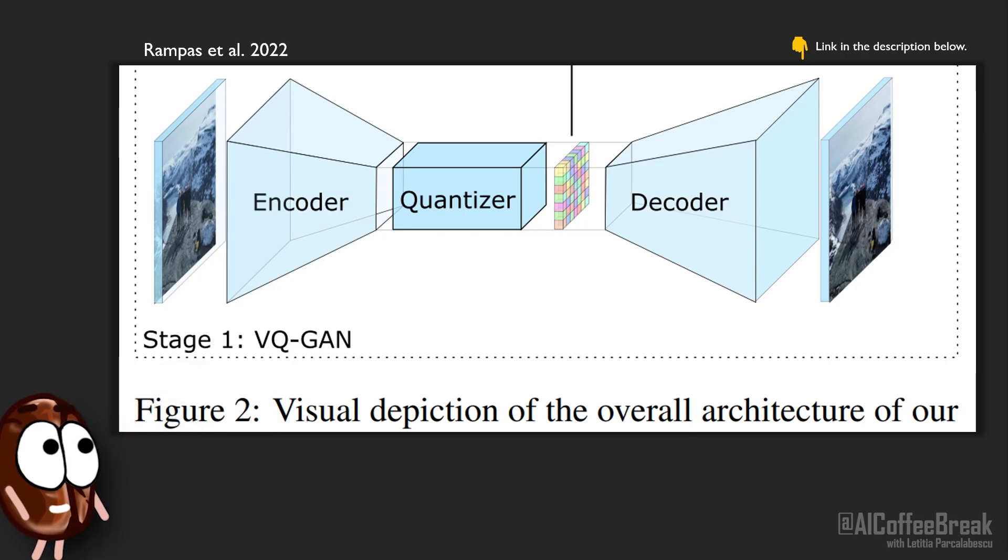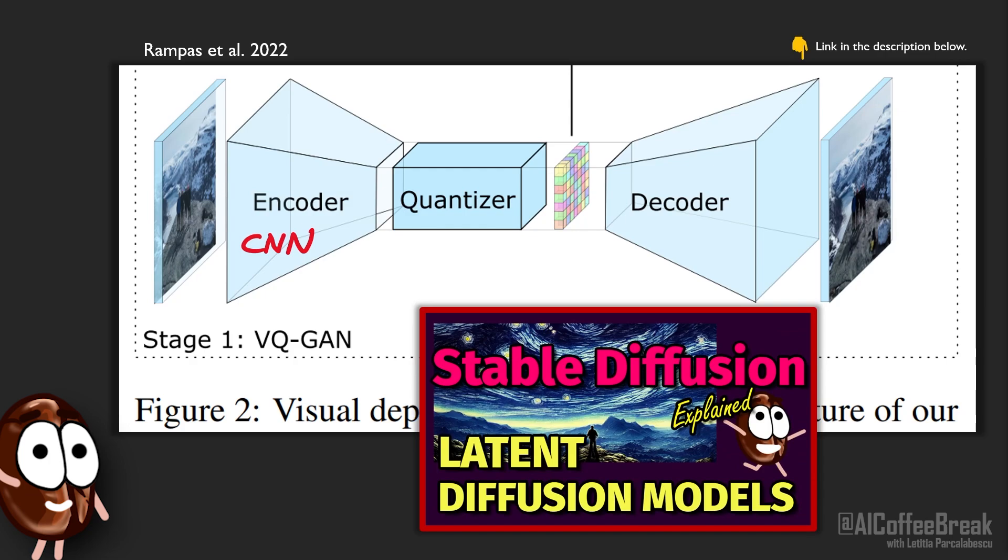The main idea of a VQGAN is to take the image, run it through an encoder neural network, in this case it's CNN based, to represent it in a lower dimensional space. You are correct to be reminded of the latent diffusion models, because this is a trick they employ there too.